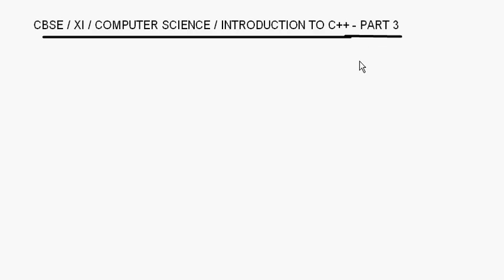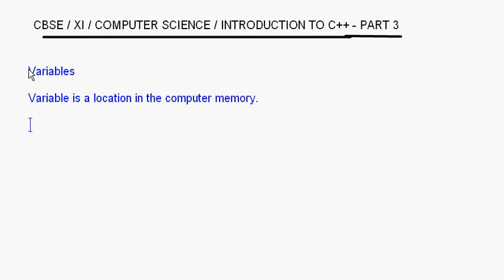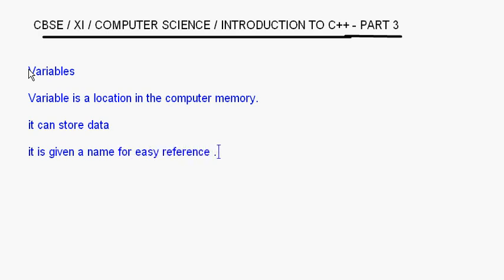Today let's understand what variables are in C++. A variable is the most fundamental concept of any programming language. Basically, a variable is a location in the computer memory which can store data and is given a symbolic name for easy reference, so that we know the different variables we have and what values we are storing in each variable.